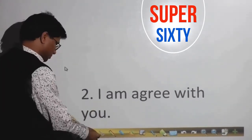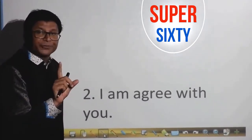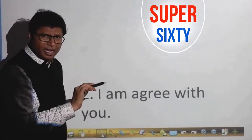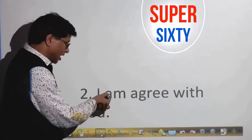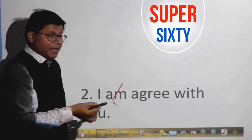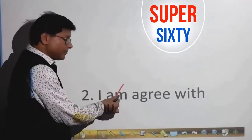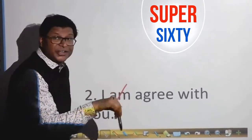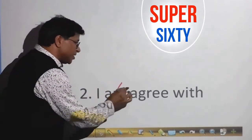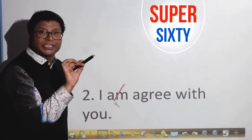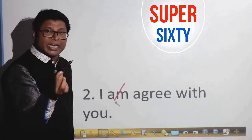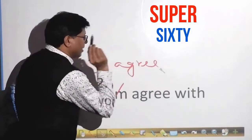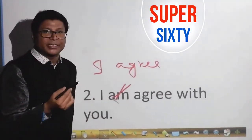The second sentence: 'I am agree with you.' Many students write this when chatting or messaging. Remove 'am' because 'agree' cannot be used with 'is/am/are.' The correct forms are: I agree with you, he agrees with you, they agree with you, she agrees with you. Never use 'I am agree.'